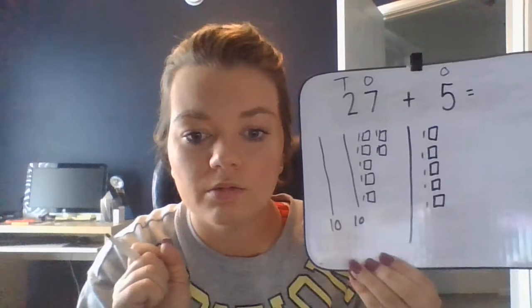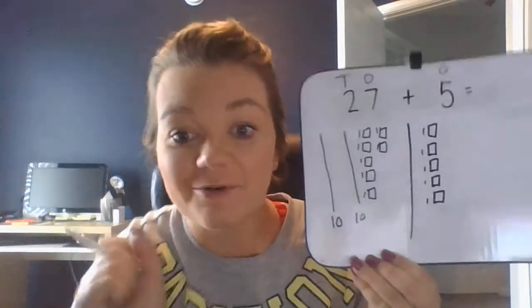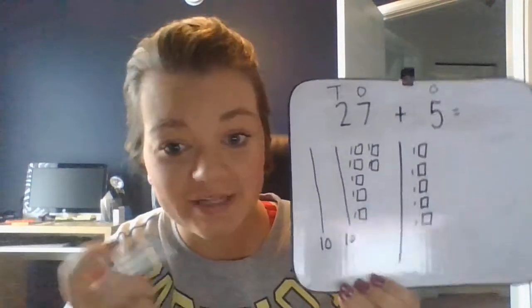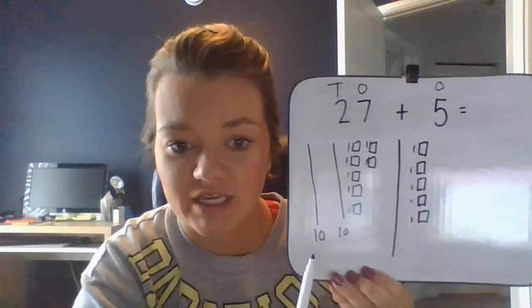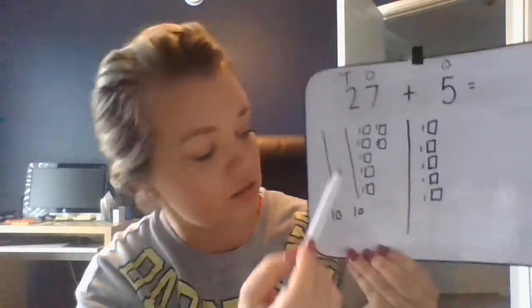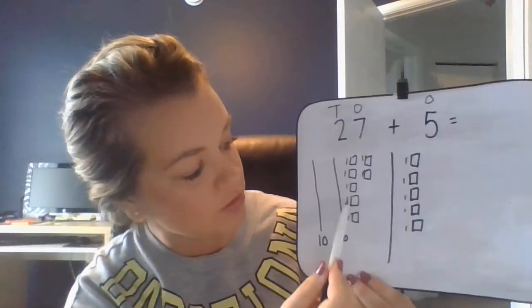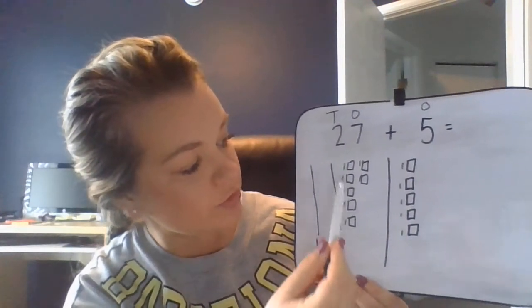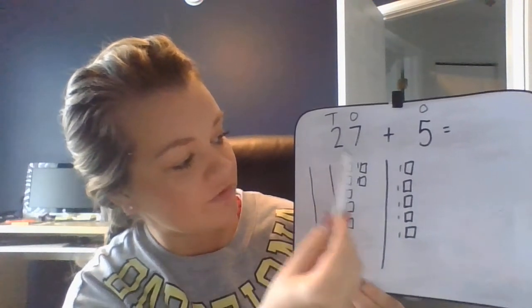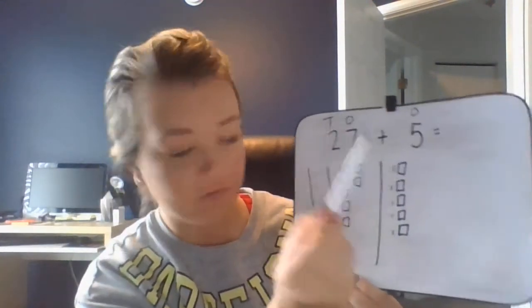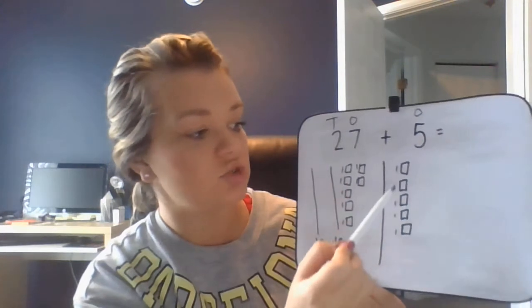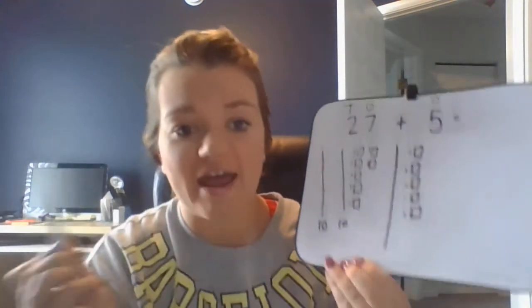All right, does your board match mine? For 27 I have: 10, 20, 21, 22, 23, 24, 25, 26, 27, plus 5: one, two, three, four, five.